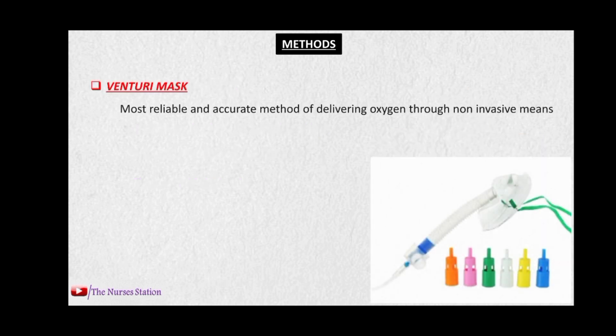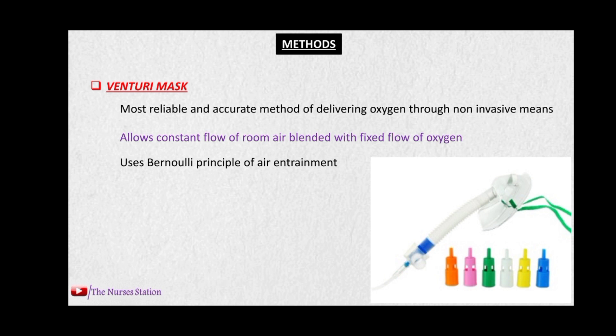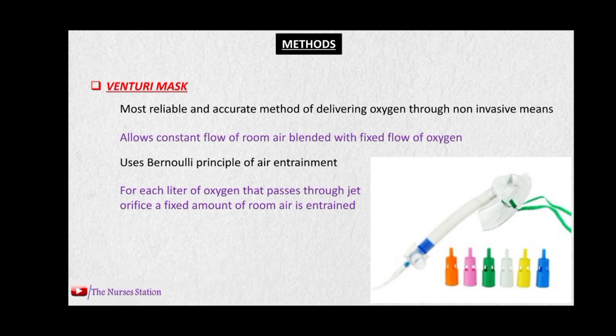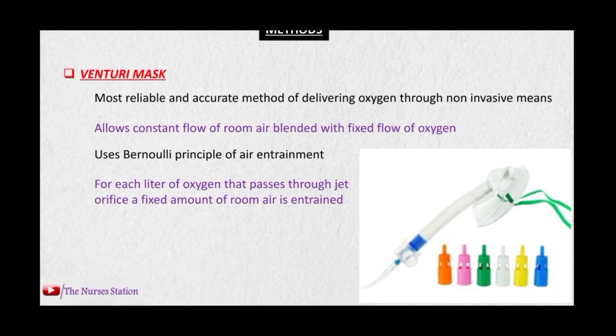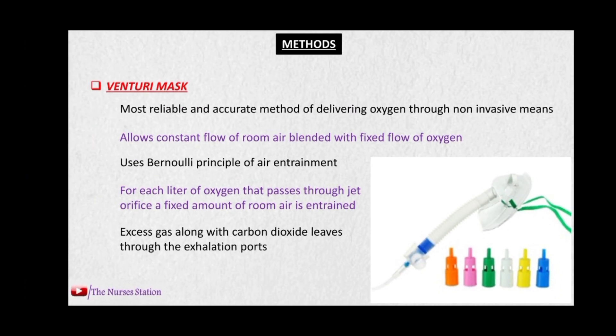The next method is the Venturi mask. It is the most reliable and accurate method of delivering oxygen through non-invasive means. It allows a constant flow of room air blended with a fixed flow of oxygen, using the Bernoulli principle of air entrainment. For each liter of oxygen that passes through the jet orifice, a fixed amount of room air is entrained through holes in the jet orifice. Excess gas along with exhaled carbon dioxide exits through the exhalation ports. The flow rate is 4 to 8 liters per minute.